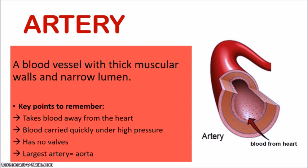Key points to remember about the artery: arteries take blood away from the heart — this includes the aorta and the pulmonary artery. The blood carried is under high pressure, moving very quickly. You can relate this to the structure: the thick muscular walls help withstand that high pressure, and the narrow lumen is what actually helps to maintain that high pressure.